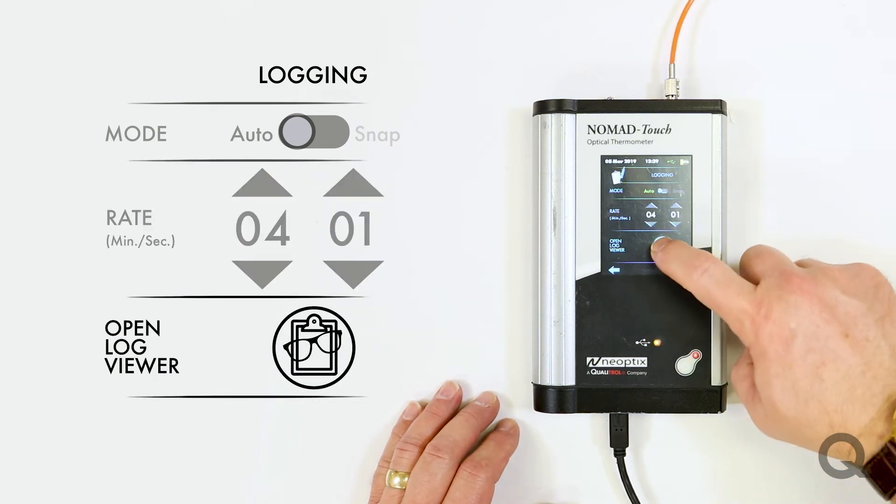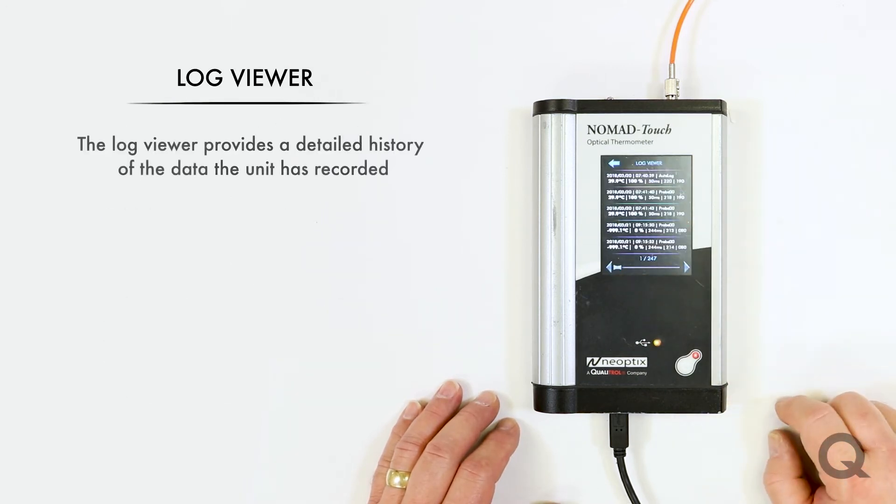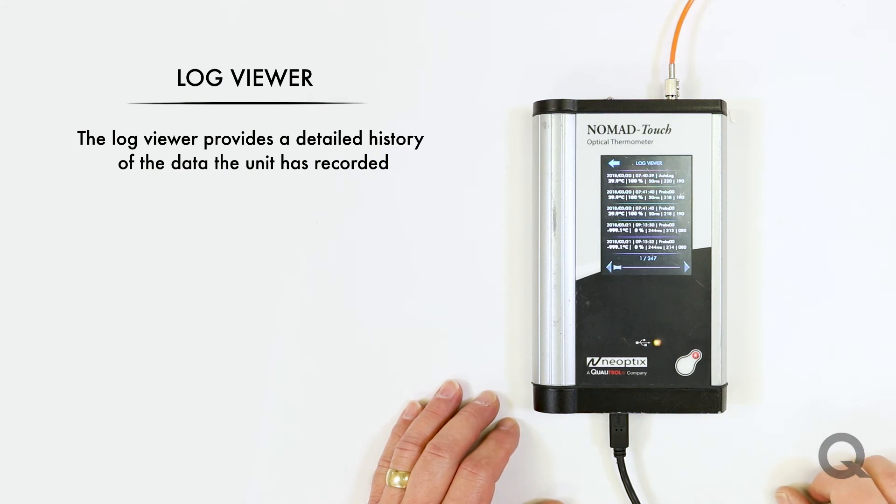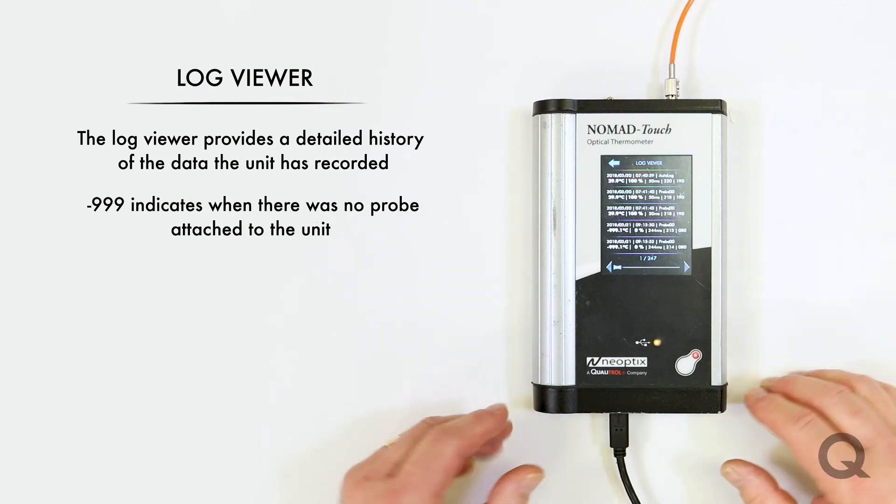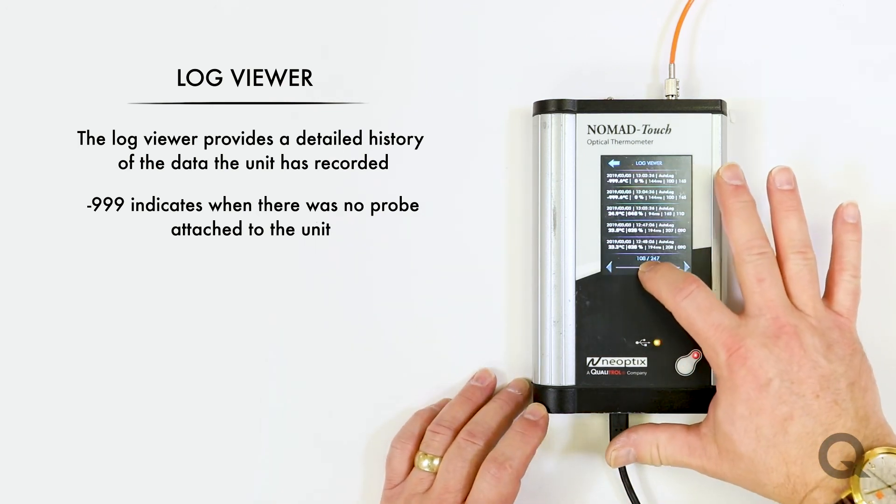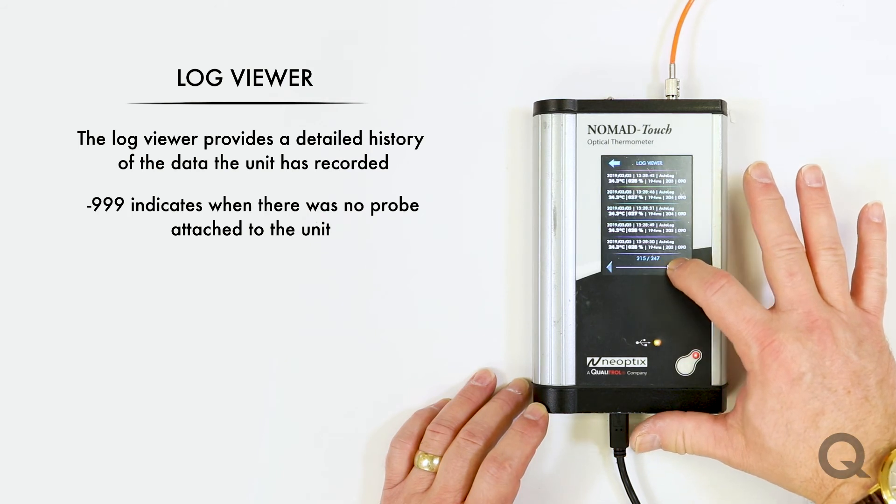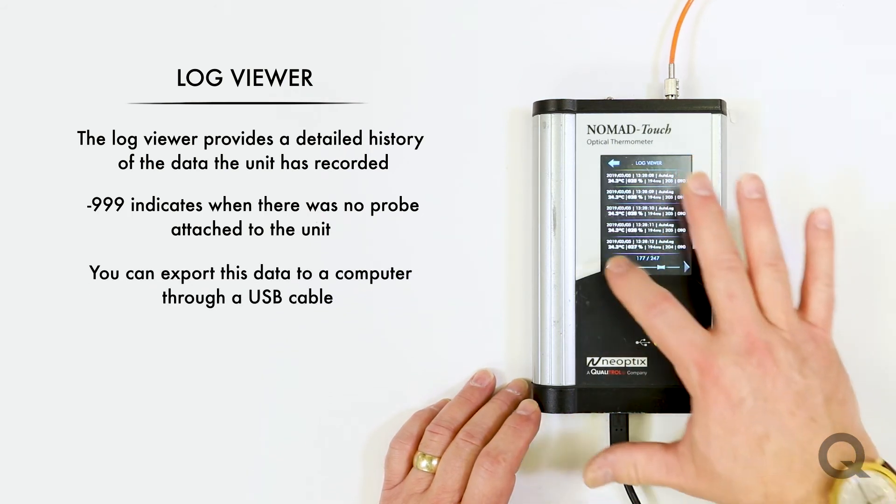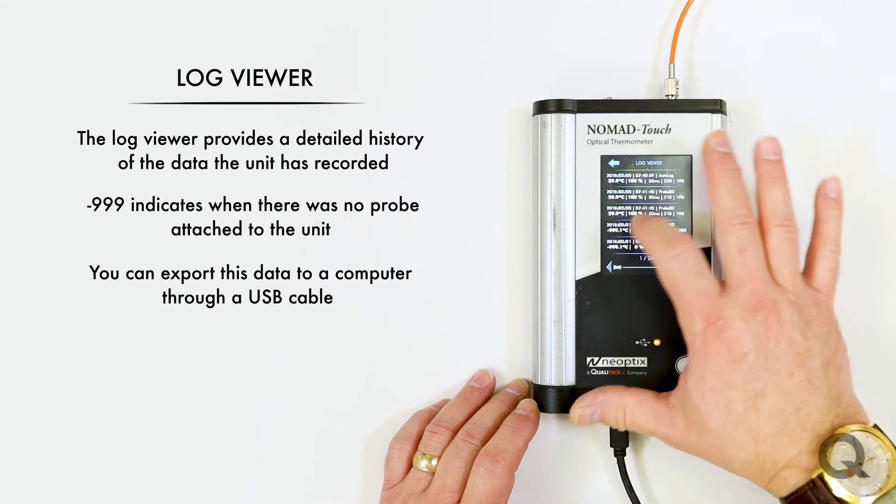You can also open the log viewer and see what the unit's been doing, and you can see these minus 999s are when I didn't have any probe attached to the unit. And you've got a sliding scale, so you can go backwards and forwards in time. And you can export data through a USB cable right to your PC.